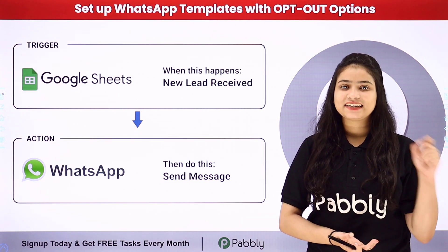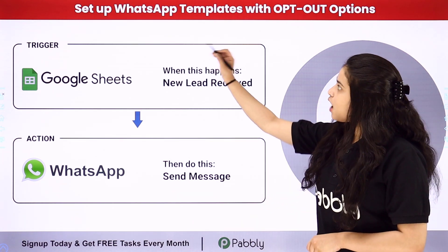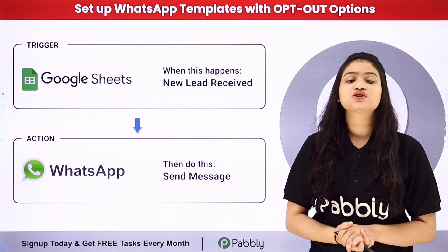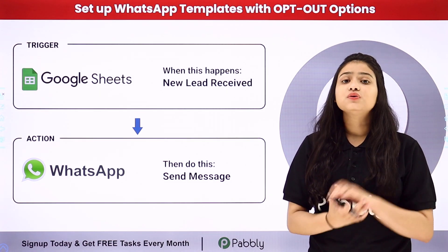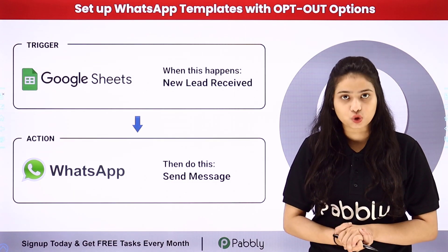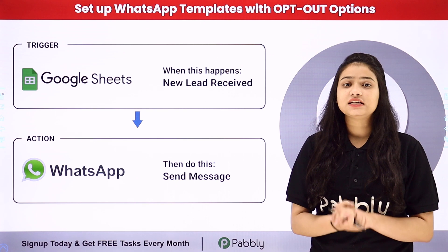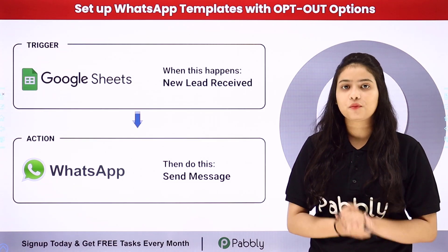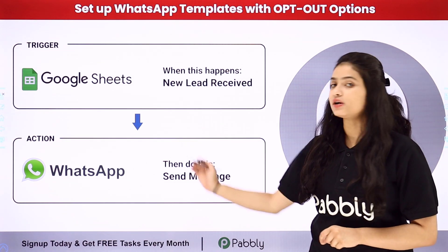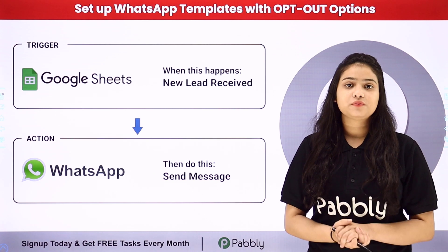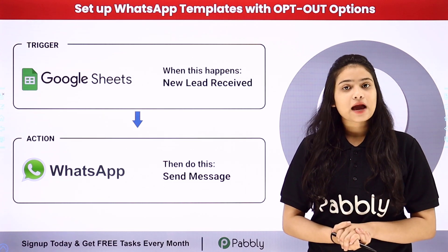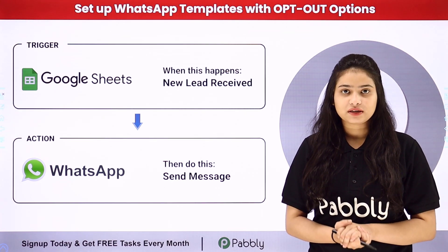Hello everyone, welcome back to Pabbly Connect. In this video we are going to learn how to set up WhatsApp templates with opt-out options. I have an event management company and I have the details of all my leads in my Google Sheets. I want to send a confirmation message to all these leads on WhatsApp whether they are going to attend my event or not — a template message with quick reply buttons containing yes or no options — and automate this entire process without any coding or programming skills.